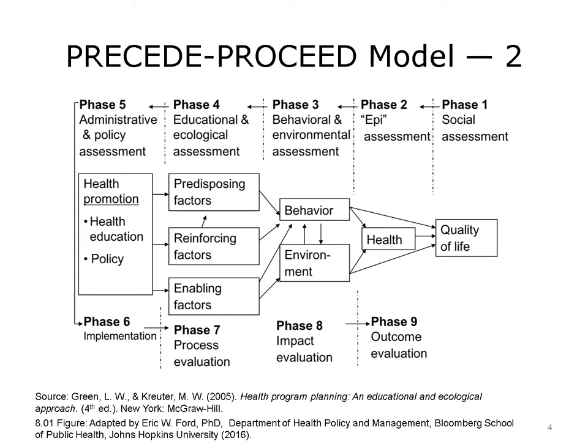For example, we may want people to bike to work more, so we design a program that increases the number of bike lanes with the hope of reinforcing and enabling people to ride their bikes. We can then move into Phase 7, our process evaluation — this is where we look at whether we got the environment changed in the way we wanted. Did we meet our target of adding 50 or 60 miles of bike lanes in our community? How many more bikes were sold before and after the intervention? Phase 8 is where we actually go back to the population or individuals themselves to assess the impact of the program. Do we see people riding their bikes to work? We could put things like rumble strips in the roads to measure bike behavior at particular intersections.